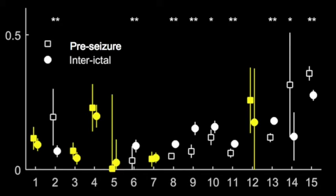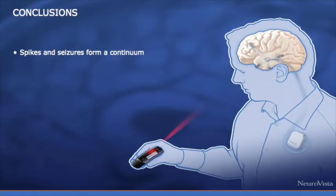Our findings show that spikes are neither exclusively protective or provocative. We also show that spikes and seizures are linked and are part of a continuum of epileptic events. There is a complex relationship between spikes and seizures which is highly subject specific.